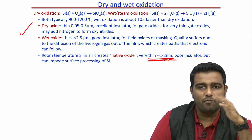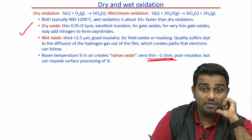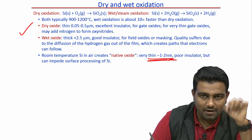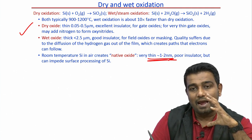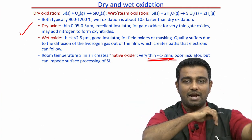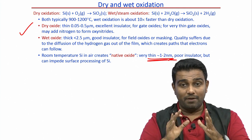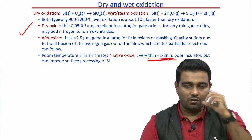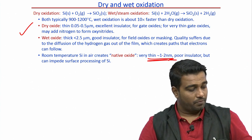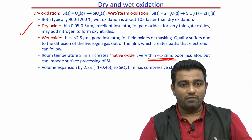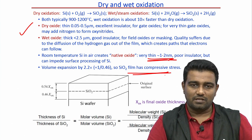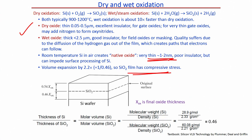At room temperature, silicon in air creates a native oxide — an extremely poor insulator that can impede surface processing of silicon. Therefore, always dip the silicon wafer in HF for 5 to 10 seconds before starting the process. The volume expansion of SiO2 results in compressive stress; the ratio of silicon thickness to silicon dioxide thickness is approximately 0.46.